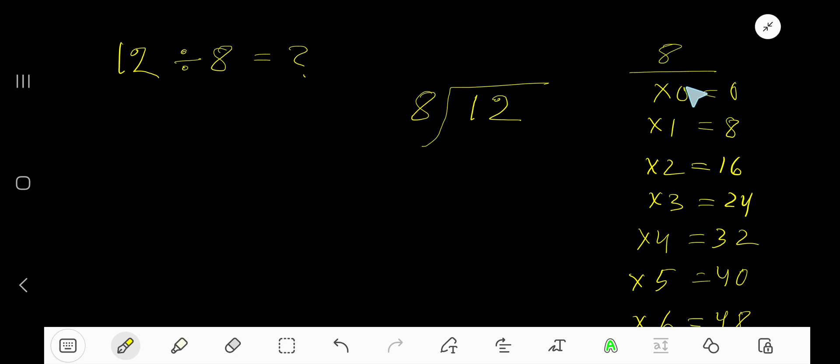To find out the multiplication table of 8, just add 8 to the previous step. 0 plus 8 is 8, 8 plus 8 is 16, 16 plus 8 is 24, 24 plus 8 is 32, 32 plus 8 is 40.